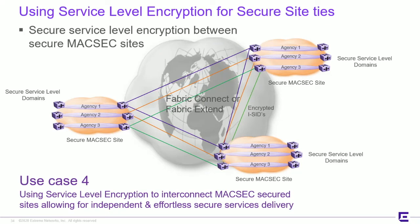We can extend this further to interconnect secure MaxSec domains with service-level encryption across vast distances, either through Fabric Connect or Fabric Extend. The encrypted ISIDs can provide interconnection between major sites over a provider network, dark fiber, or any infrastructure that does not require fragmentation or reassembly. If fragmentation or reassembly is required, we simply use the XA series to provide that end-to-end extension of the encrypted footprint.